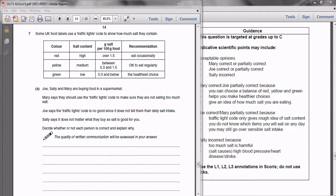So that means you need to comment on each of them. If you don't comment on each of them, you're going to lose marks. So let's take each person individually. Mary says that they should use traffic light coding to make sure that they're not eating too much salt.